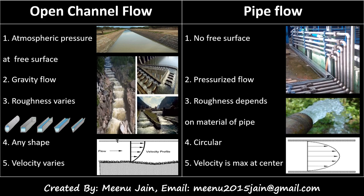Open channels may have any shape like rectangular, irregular, parabolic, triangular, trapezoidal, circular, etc., but pipes generally have a circular cross section. Surface roughness varies widely from place to place due to natural streams, but in pipe flow roughness depends on the material of the pipe. In open channels, velocity is maximum at a little distance below the water surface, and the shape of the velocity profile depends on channel roughness. While in pipes, velocity is maximum at the center of flow and reduces to zero at the pipe wall, with velocity distribution symmetrical about the pipe axis.